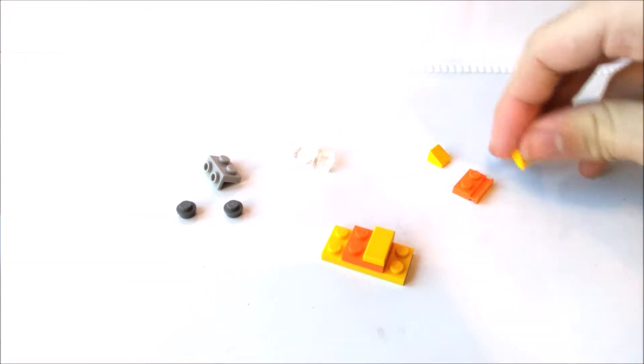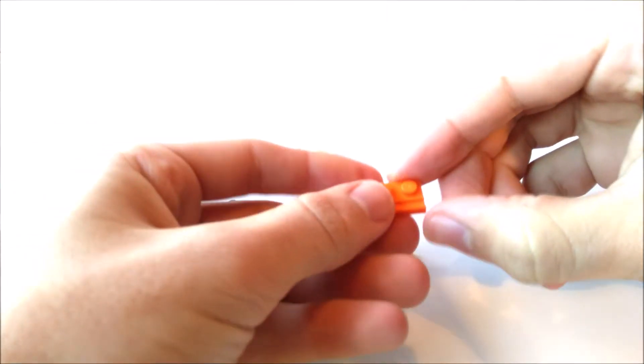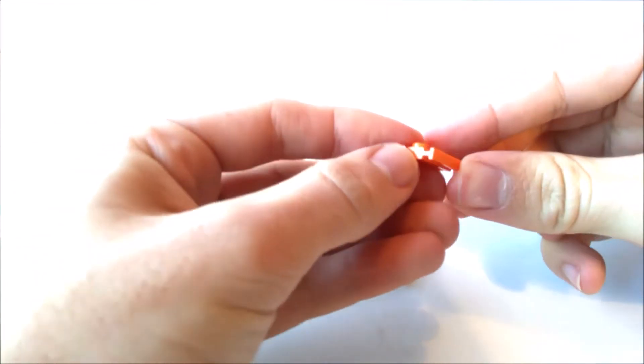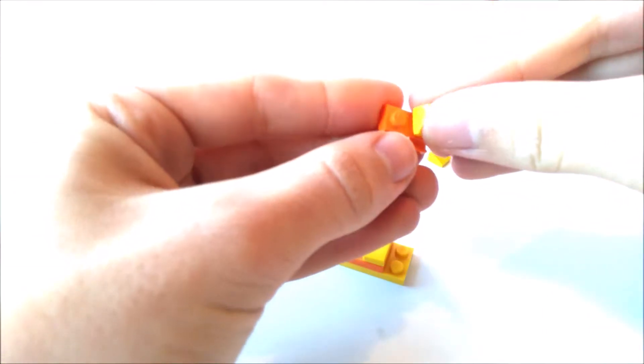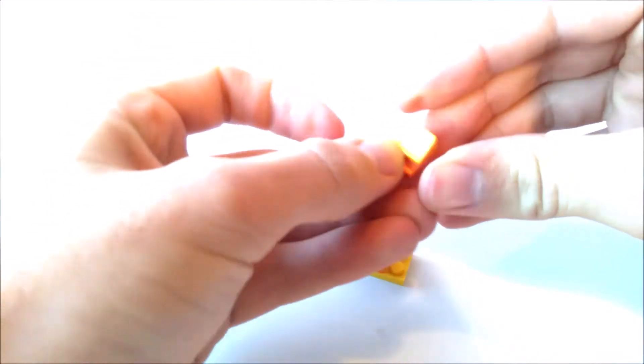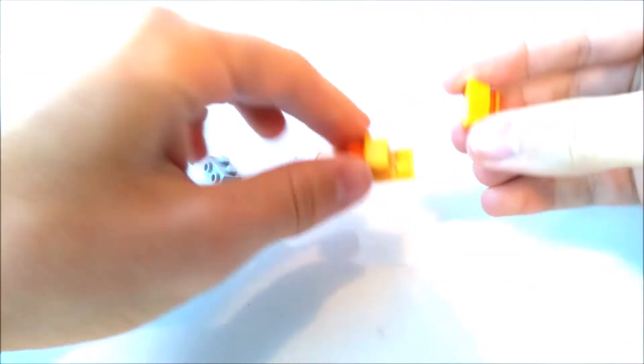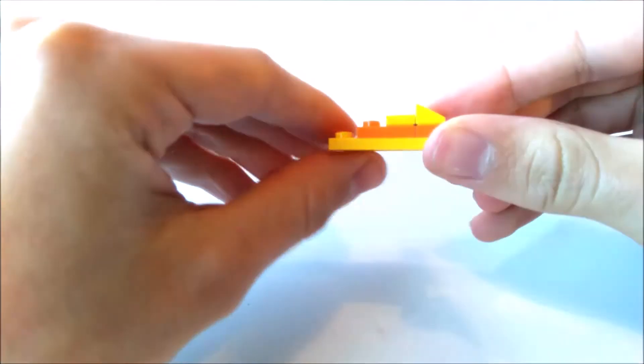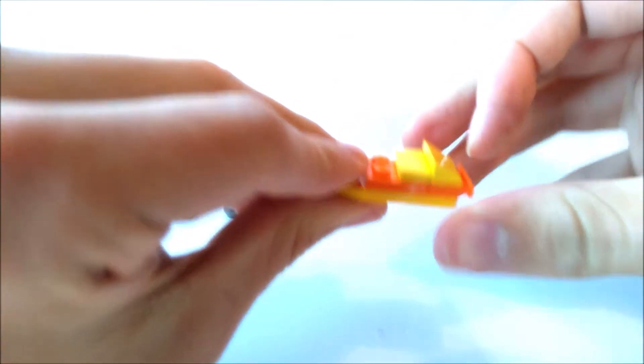Now we need to make the headrests, which is a 1x2 orange plate with the sliding rail, and two little yellow cheese wedges that actually look like cheese for once, on the top. That attaches to the back, next to where the plate is.